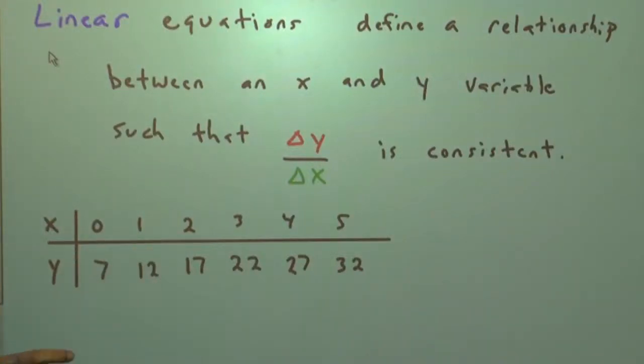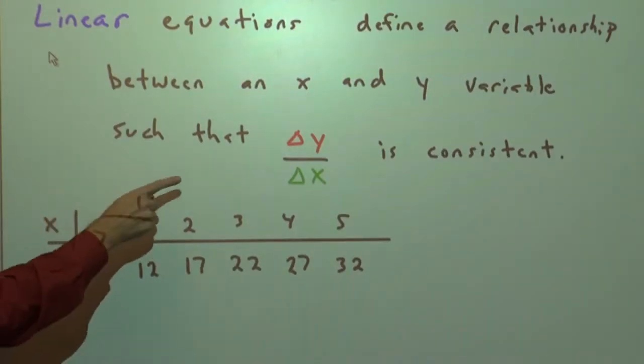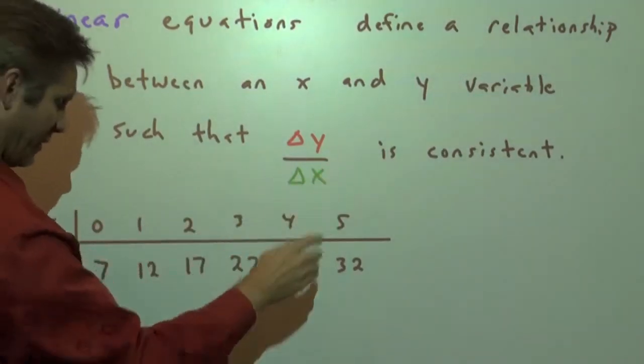We're going to deal with a point-slope form of an equation. First, a linear equation defines a relationship between an x and y variable such that the change in y over the change in x is consistent.